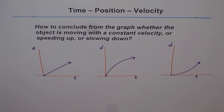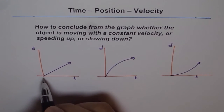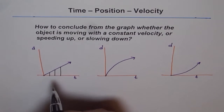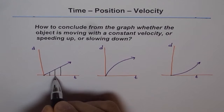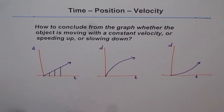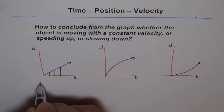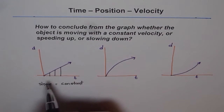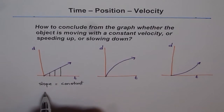Now we'll analyze these graphs and see which one represents what. Take a good guess and reason it out for yourself. For the first graph, if you see, the rate of change of distance with time is the same in every unit — these are all similar triangles. The ratio of rise over run is the same, so this gives you constant velocity. The slope is constant, which means it is constant velocity.